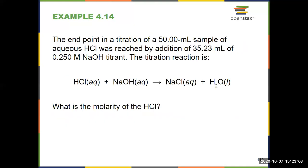So here in example 4.14, we're given an example of how a titration problem might appear. An acid-base titration. We're given 50 milliliters of aqueous HCl, and that reacted by adding, it reached the endpoint by adding 35.23 milliliters of 0.25 molar sodium hydroxide. We're given the reaction. First thing we do, make sure the reaction is balanced, which it is. Check the atoms on each side, and then we're asked to calculate the molarity of the HCl.